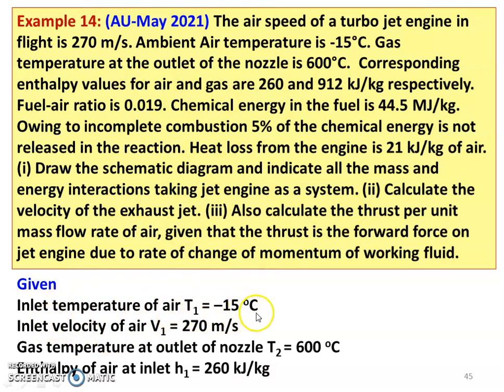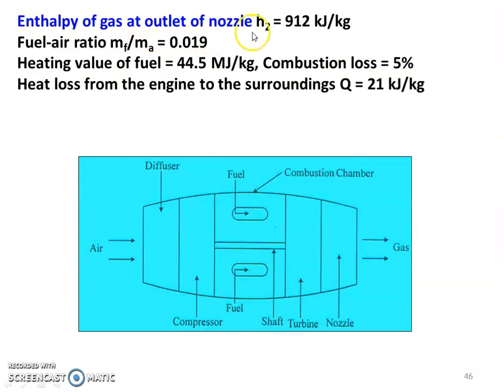Inlet temperature T1 minus 15 degrees Celsius. Inlet velocity of the air V1 270 meters per second. Gas temperature at the outlet T2 600 degrees Celsius. Enthalpy of the air H1 260 kilojoules per kilogram. Enthalpy of the gas at the outlet H2 912 kilojoules per kilogram. Fuel air ratio, mass of fuel divided by mass of air, equal to 0.019. Heating value of the fuel 44.5 megajoules per kilogram. Combustion loss 5 percent, so combustion efficiency is 0.95. Heat loss from the engine to the surrounding 21 kilojoules per kilogram.